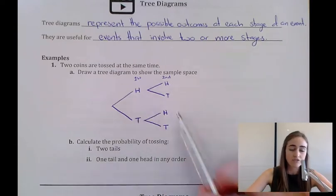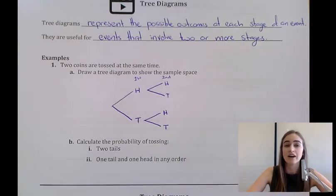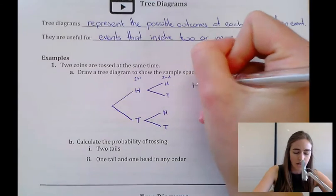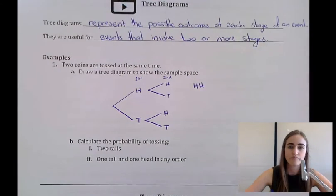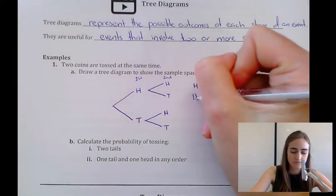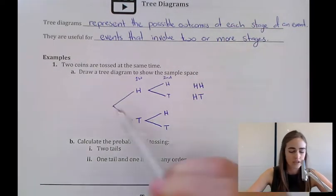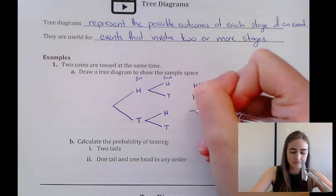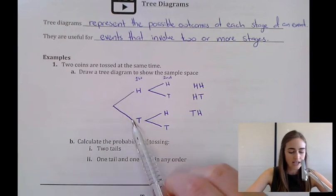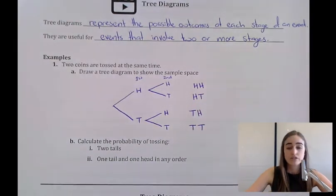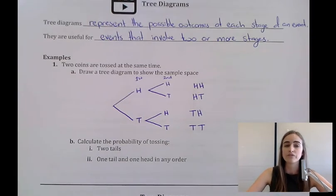So what we can do then is we can read along the branches of our tree diagram to figure out what the possible outcomes are. On our first coin, we could get heads, and then our second coin, we could get heads. So we could have H, H. Or we could get heads on our first coin and tails on our second coin. Heads, tails. Then we could get tails on our first coin and heads on the second. And then we could get tails on our first and tails on our second. So there's four possible outcomes when we flip two coins.